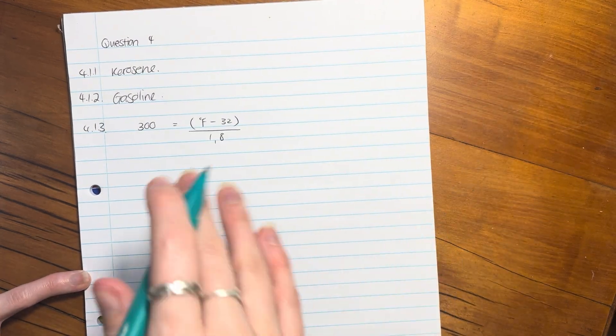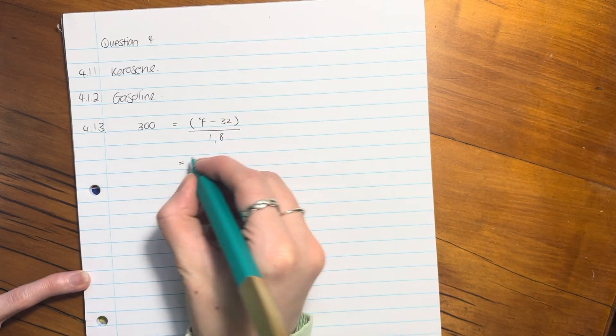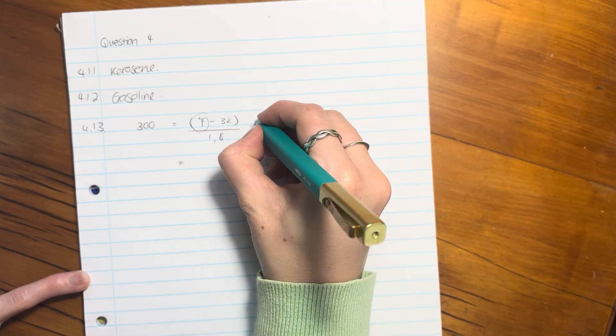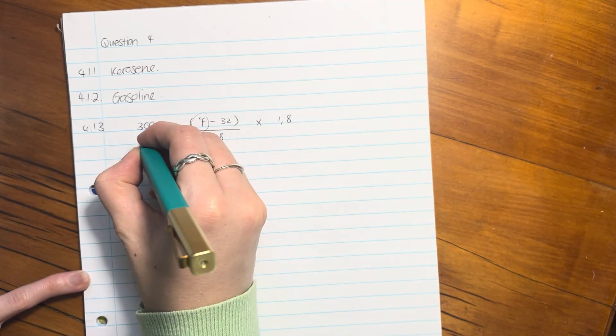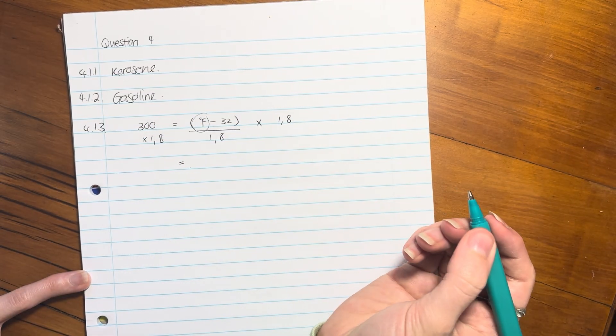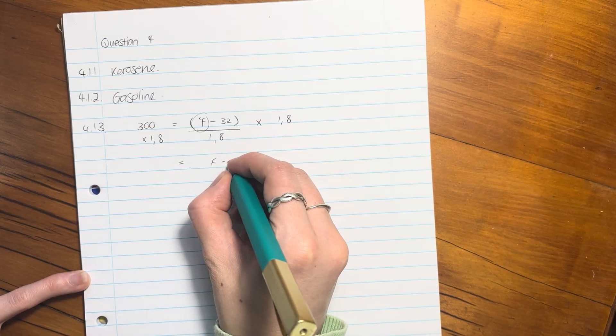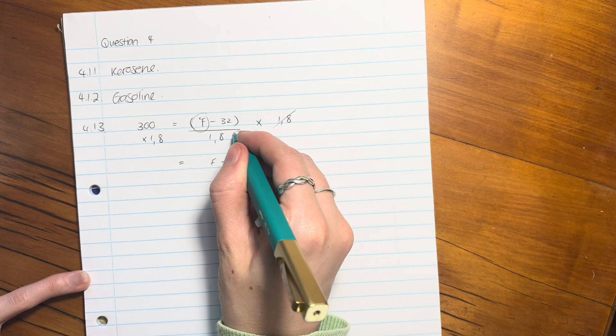These are the ones that students sometimes find a little bit difficult to unwind, but what you need to do is the opposite operations. We want to get this F by itself. So we're going to times this side by 1.8, and what we do to the one side, we have to do to the other. That's going to give me this because those two cancel.